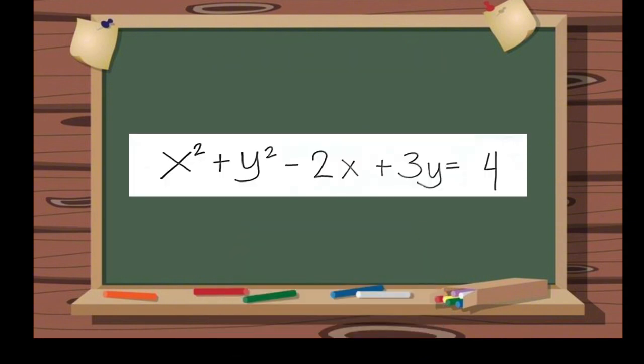For our first example, as you can see, y is not isolated in our equation. It would be quite difficult to rearrange this. When y is not given explicitly as a function of x, the function is said to be defined implicitly.